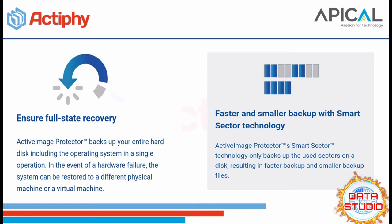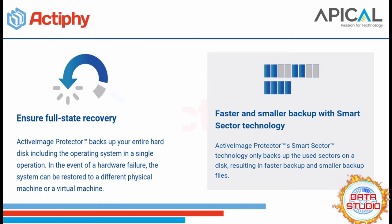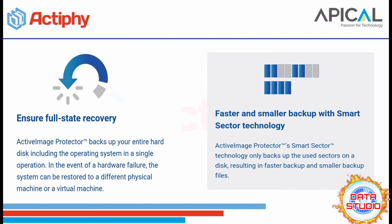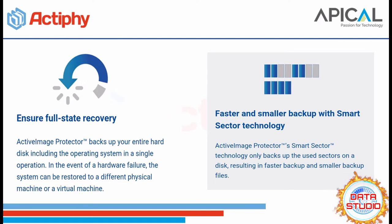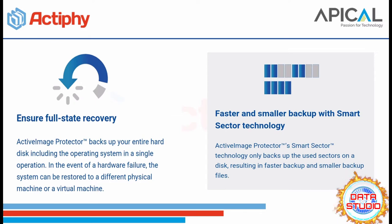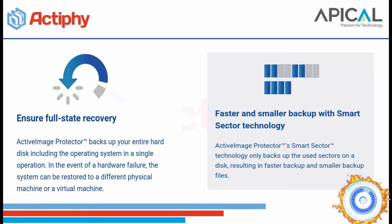In the event of hardware failure, the system can be restored to a different physical or virtual machine. Active Image Protector's smart sector technology only backs up the used sectors on a disk, resulting in faster backup and smaller backup files.